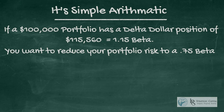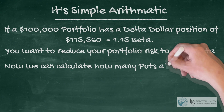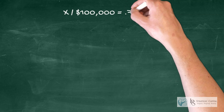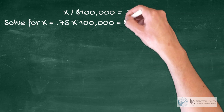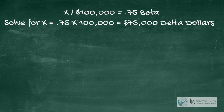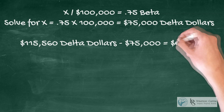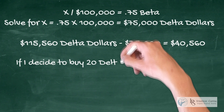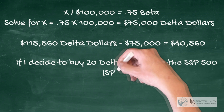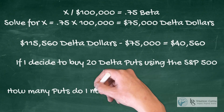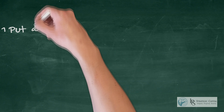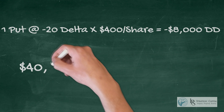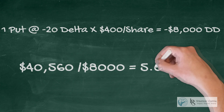If you want to reduce your portfolio exposure to, let's say, 0.75, you can calculate how many puts at a particular Delta you'll need to get your portfolio beta down to 0.75. X divided by a $100,000 portfolio gives you a beta of 0.75 — solve for X, and X comes to $75,000 Delta dollars. So if I have $115,560 Delta dollars and need to get down to $75,000, I need to lose $40,560. If I buy 20-Delta puts on SPY at $400 a share, that's $8,000 Delta dollars per put. Dividing 8,000 into 40,560 tells me how many puts I need to own.